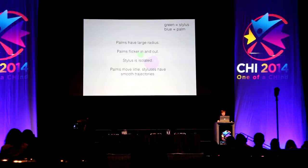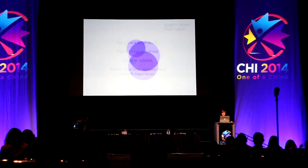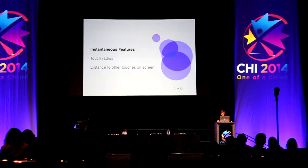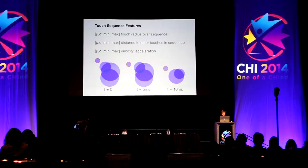From these observations, we developed features to distinguish palms from styluses. Let's go through an example. Say we have a set of touches on the screen and a new one appears. We wish to figure out whether it's a palm or a stylus — call this t equals zero. Right away, there are features that pop out, like the radius of the touch and the distance to other touches on the screen. What most people would do is build a few more features and build a classifier right there. But we found you can do much better if you wait a bit and look at how these touches change over time.